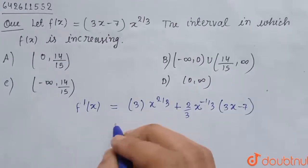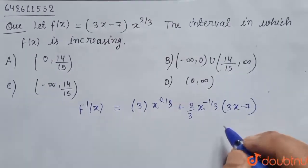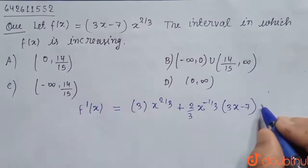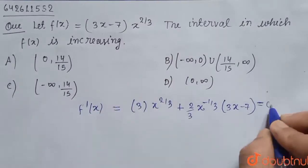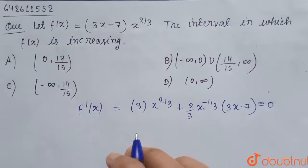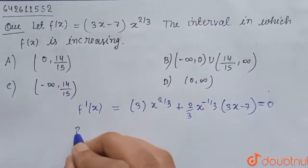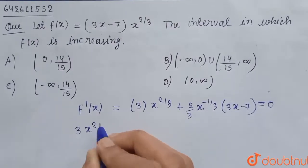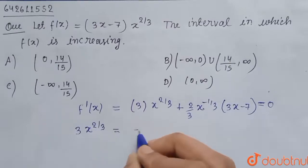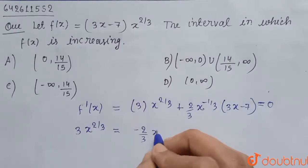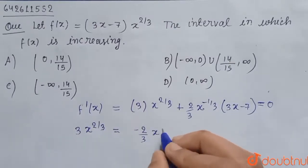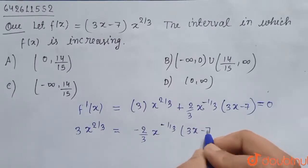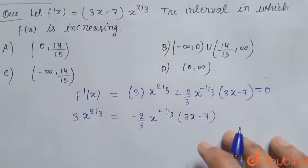Now for f(x) to be increasing, f'(x) must be greater than or equal to 0. Setting f'(x) = 0, we get: 3 · x^(2/3) = -2/3 · x^(-1/3) · (3x - 7).